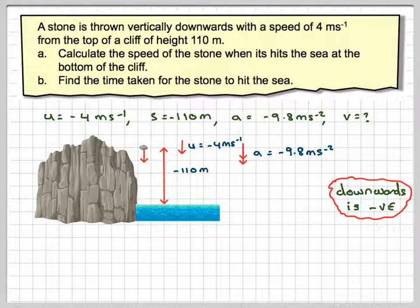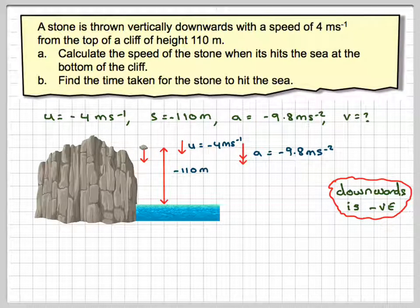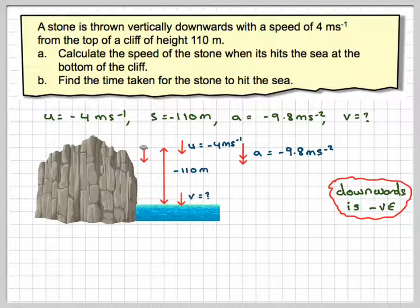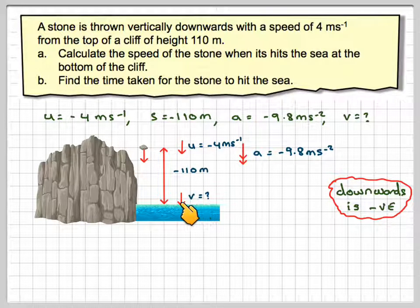Now you could take downwards as positive, that means that that and that would have to be positive, and v would come out to be positive. So v, we want to find the final velocity at which this stone actually hits the sea.